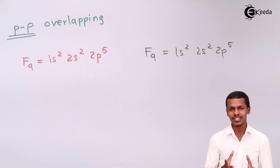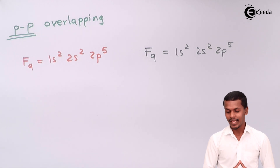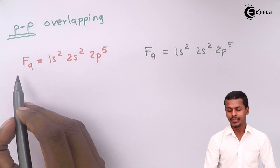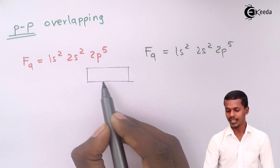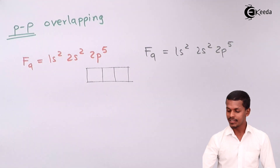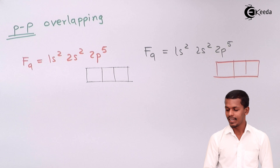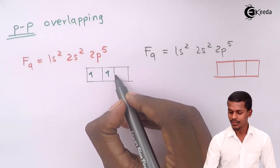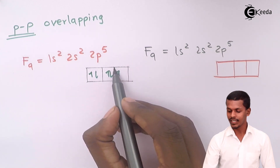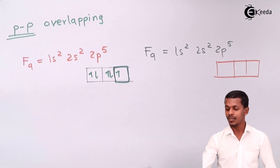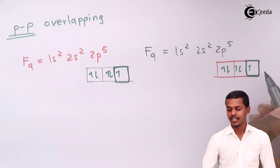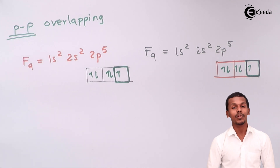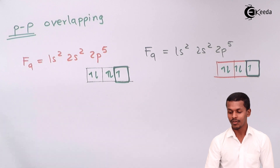Since fluorine belongs to the p-block, its outermost subshell is 2p, which consists of three p orbitals. Each fluorine has 5 electrons distributed across these orbitals, leaving one electron unpaired. The same applies to the second fluorine atom — it also has one unpaired electron. These unpaired electrons are responsible for bond formation, while the paired ones are not.